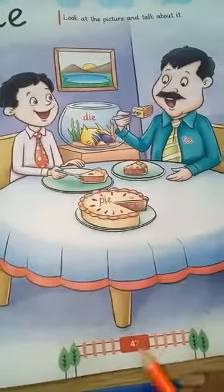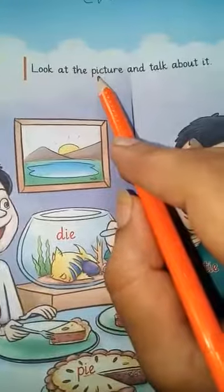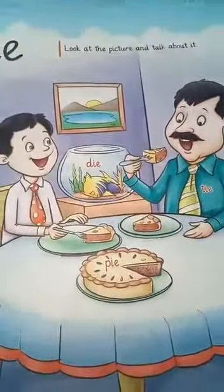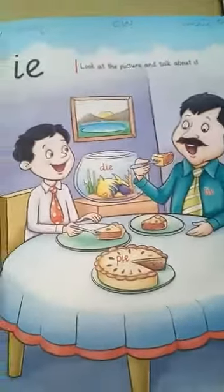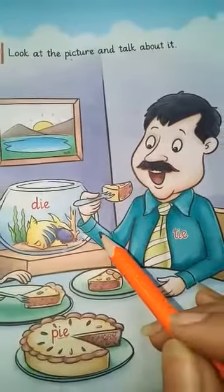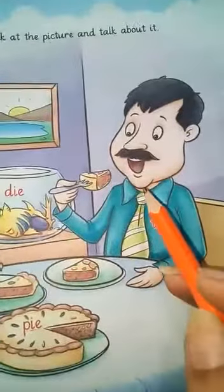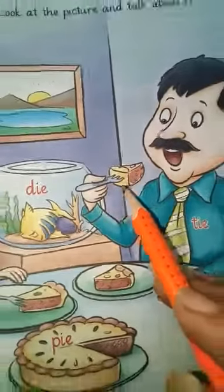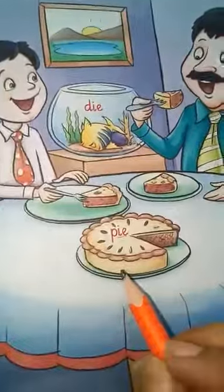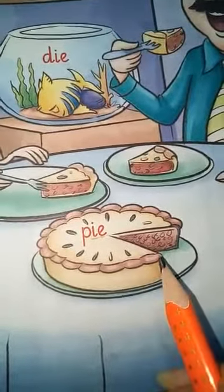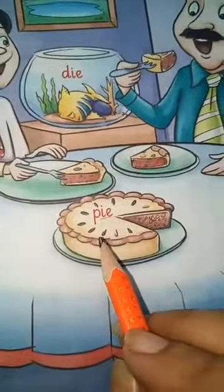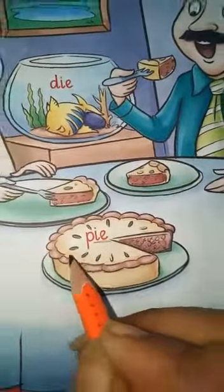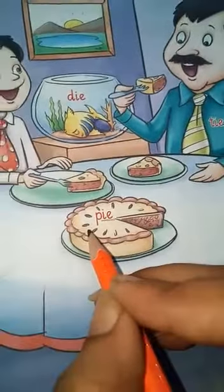On page number 47, look at the picture and talk about it. What are they doing? The father is eating a pie. Look at this — what is this? This is a pie. The word pie has an I ending sound. Pie. Read with me: pie.